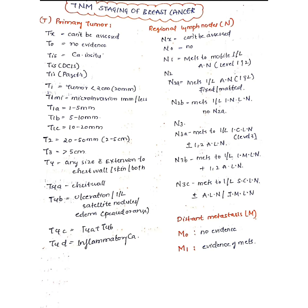For regional lymph node staging, NX means regional lymph nodes cannot be assessed. N0 means there is no evidence of regional lymph node involvement. N1 is metastasis to the ipsilateral axillary lymph nodes at level 1 and level 2.